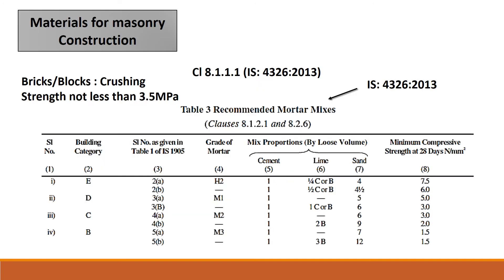Regarding materials used in masonry construction — mostly bricks and blocks laid in courses. The bricks and blocks should have a crushing strength of not less than 3.5 MPa, as per IS 4326-2013, clause 8.1.1. These bricks or blocks are laid in a mortar mix, which is defined by IS 4326 for different building categories.